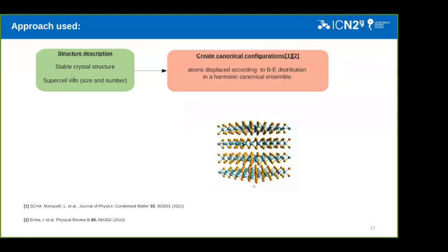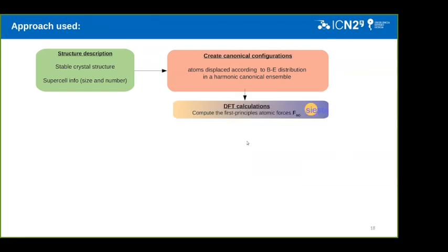And then, using this approach, we create canonical configurations according to the Bose-Einstein statistics at a given temperature. This is how a supercell looks like in our measurement, so we create many of them. I want just to mention that the initial work in which they use this approach was by Errea and Rea almost 10 years ago and is implemented in the code. Using many of these supercells, according to the Bose-Einstein statistics, we are able then to compute the forces.